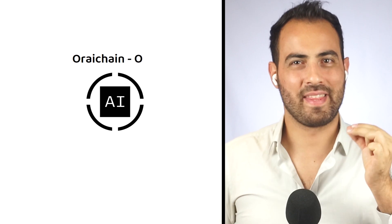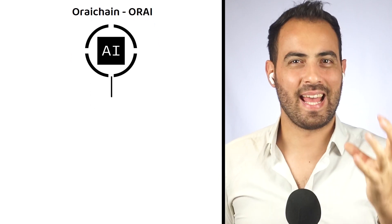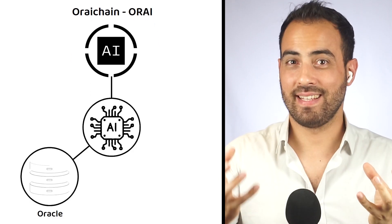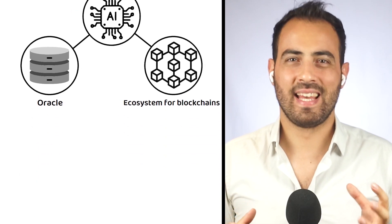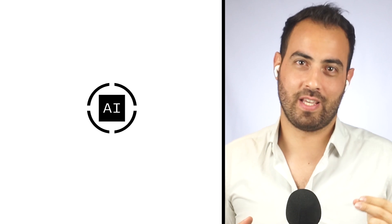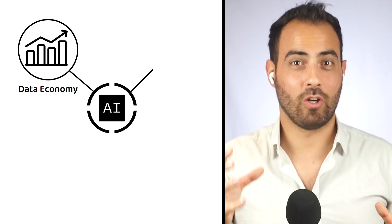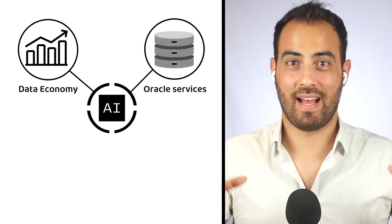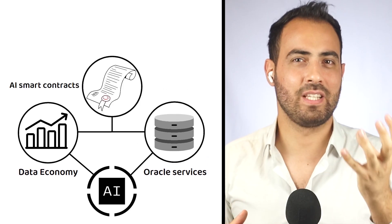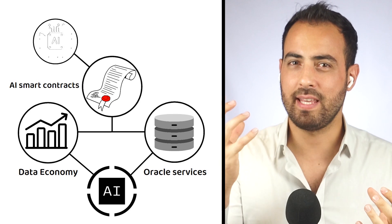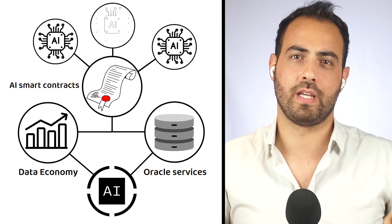Ori Chain, also known by the market ticker Ori, is an AI-powered oracle and AI-focused ecosystem for blockchains. Ori Chain is an AI layer one blockchain for data economy and oracle services that serve as a foundation layer for the creation of new AI smart contracts that will eventually help complete the AI ecosystem on the blockchain.